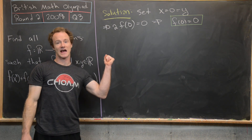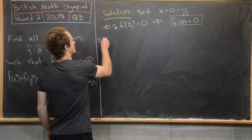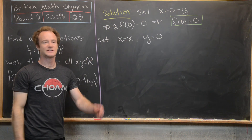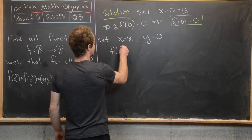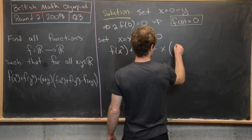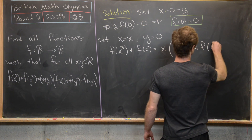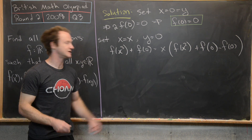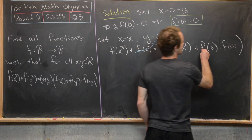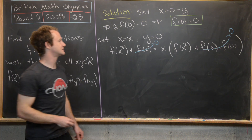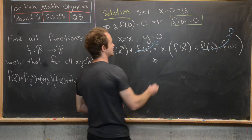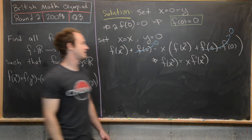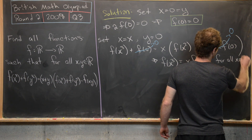Next, leave x free and set y = 0. Substituting gives f(x³) + f(0) = x·(f(x²) + f(0) - f(0)). Since f(0) = 0, everything involving f(0) cancels, giving us our second useful equation: f(x³) = x·f(x²), which holds for all real x.